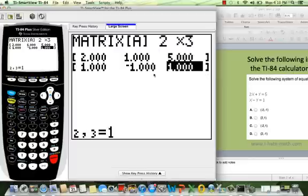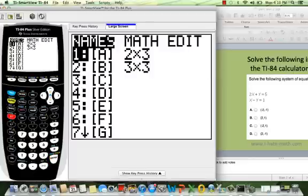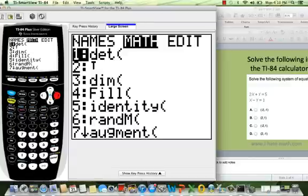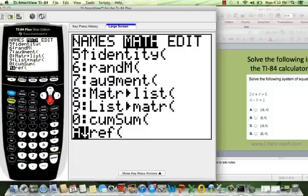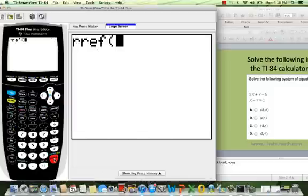In order to get out of here, you need to do second quit. Now, I'm going back to second matrix, and I go to math. I go to the function rref, which is right here, and you click enter.